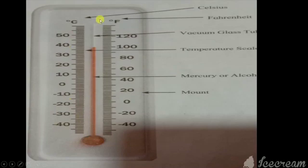Here they have given C degree, that is Celsius, and F degree, that is Fahrenheit. Then here this is a vacuum glass tube. Can you see this portion? Then temperature scale, all these lines are the temperature scale.